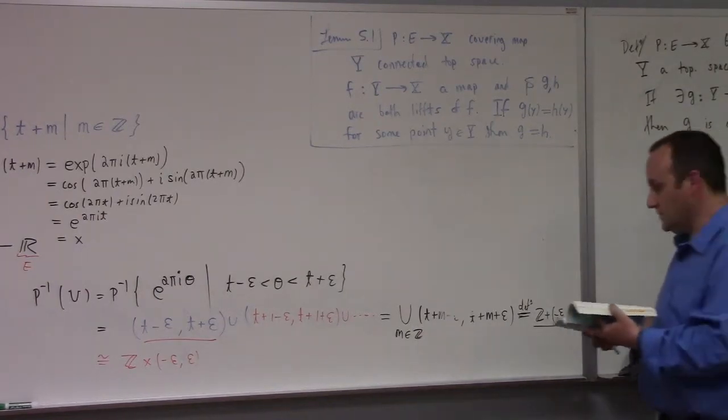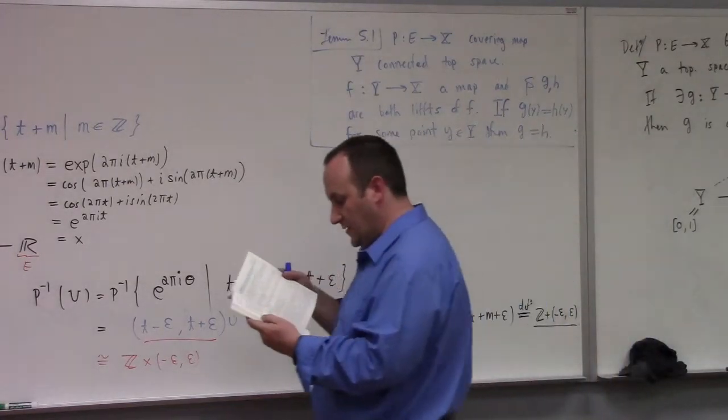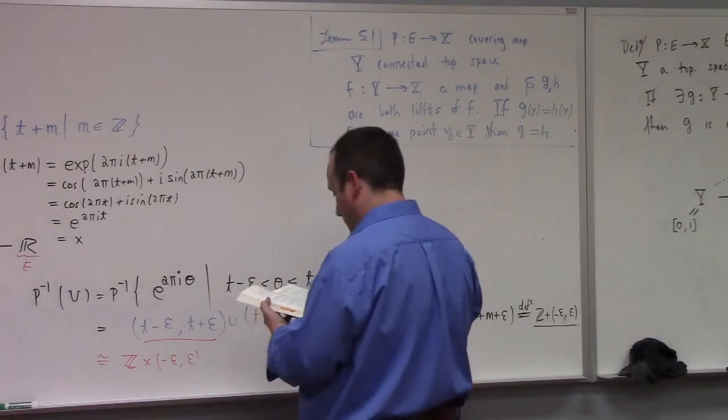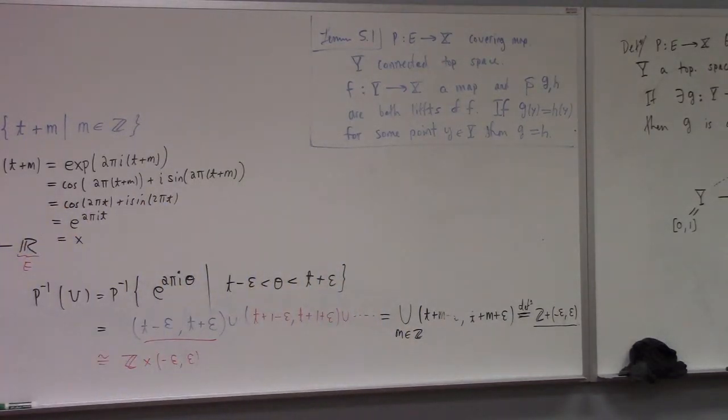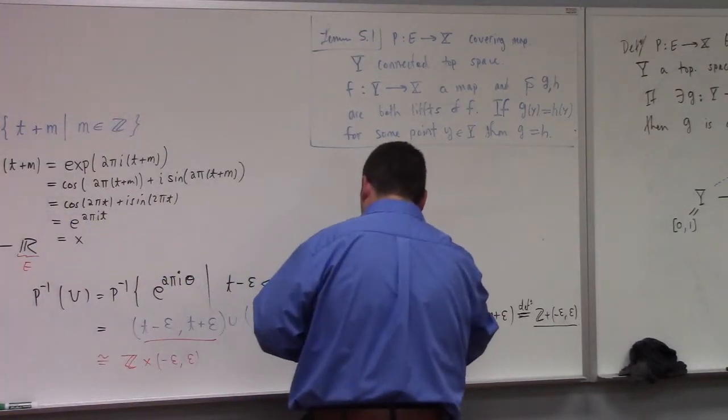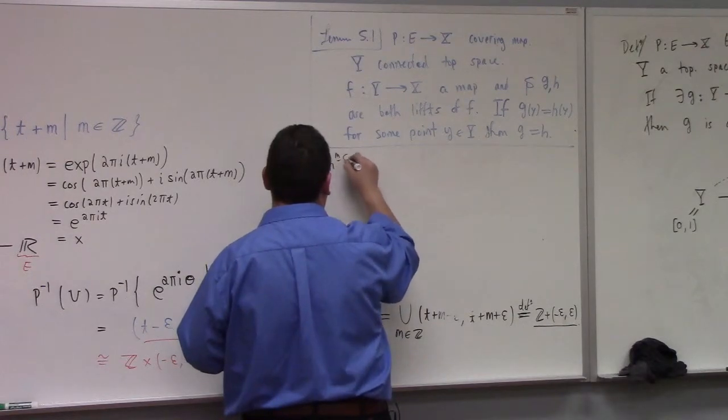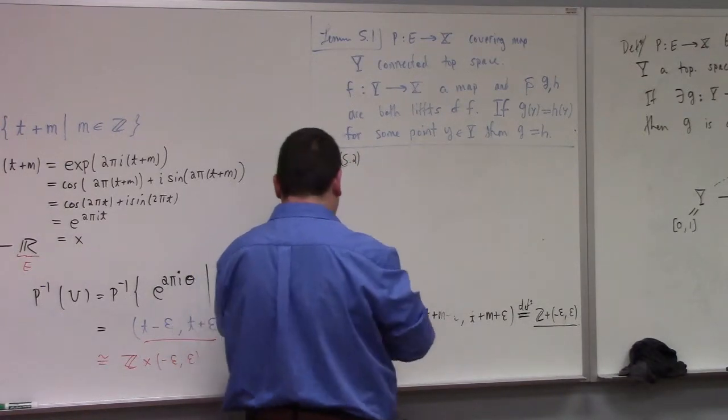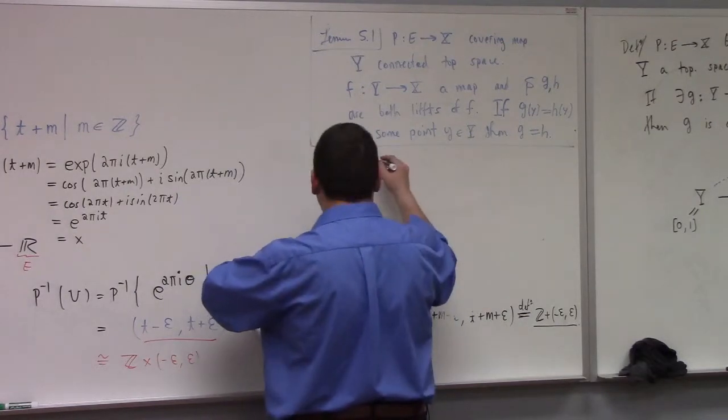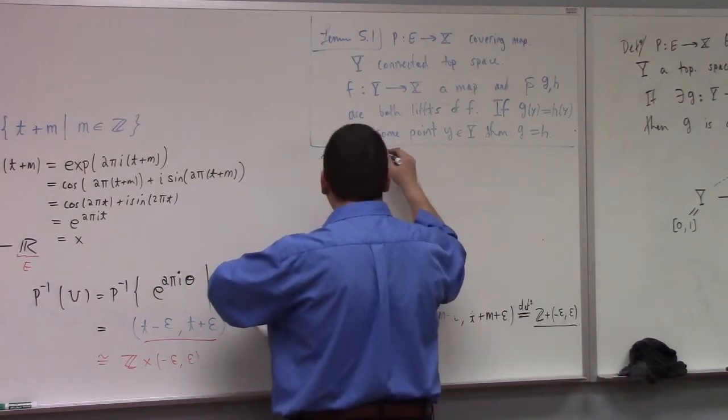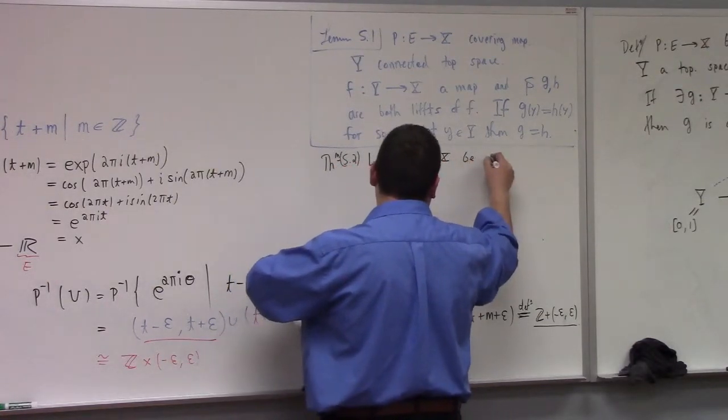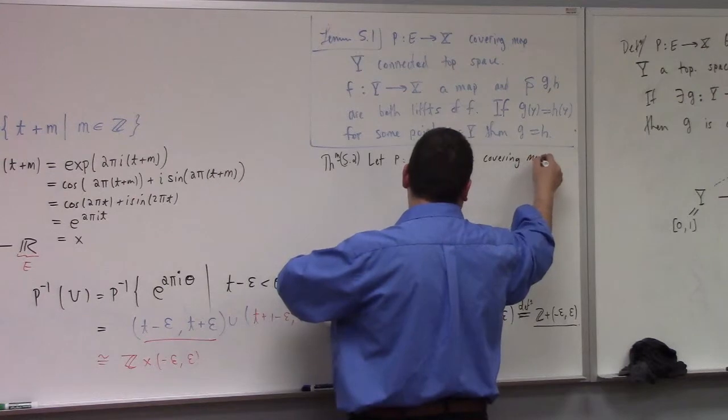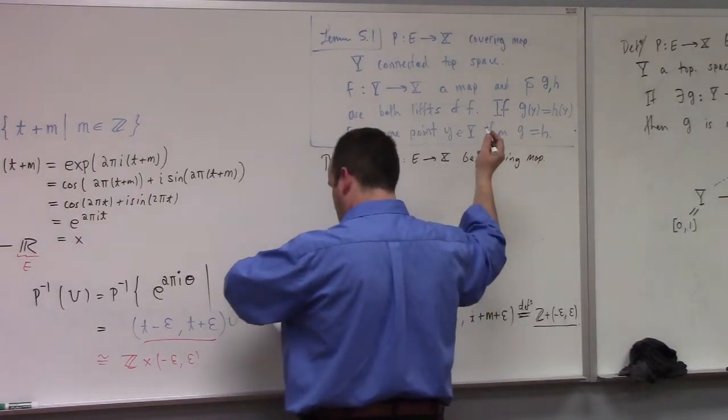That's Lemma 5.1. Proof's about a half page. Theorem 5.2, path lifting theorem. Let p from E to X be a covering map, and γ from [0,1] into X a path.